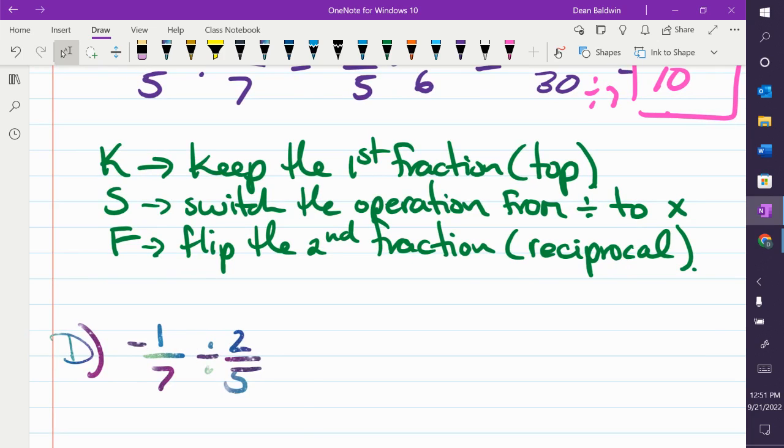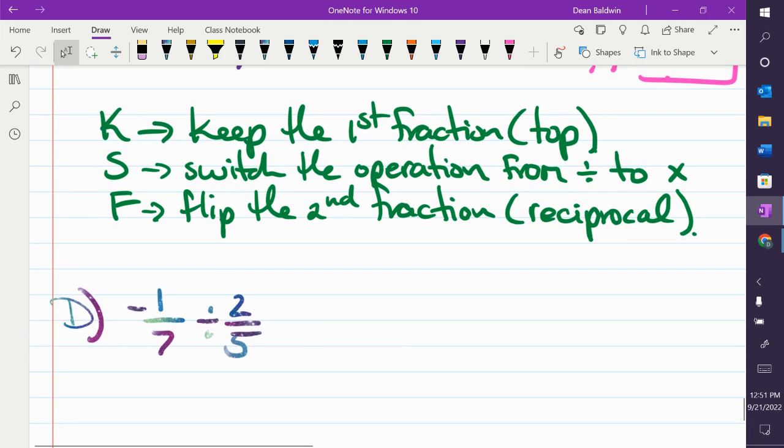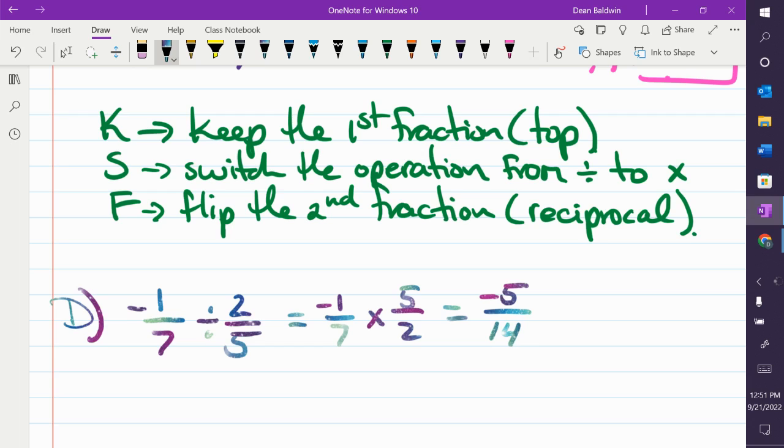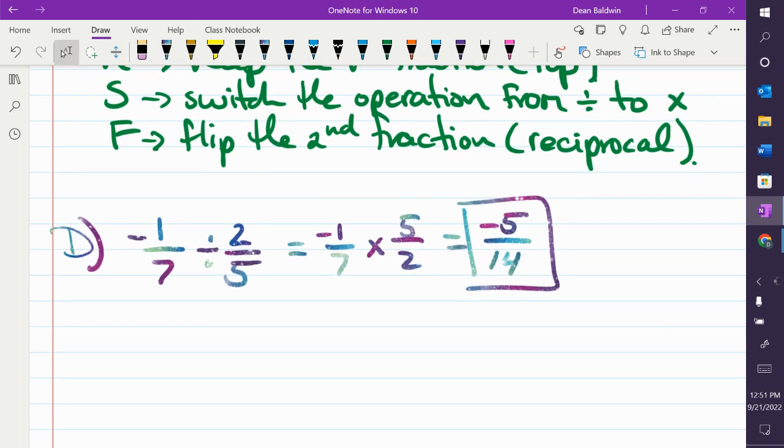Negative 1 over 7 divided by 2 over 5. Which one stays the same? First one. What happens to the division sign? Change to a multiplication. And what happens to the second fraction? And then, multiply straight across. What's negative 1 times 5? 7 times 2? Always, always, always put your fraction in lowest terms. Can I simplify that? No, you cannot. So, you are done.